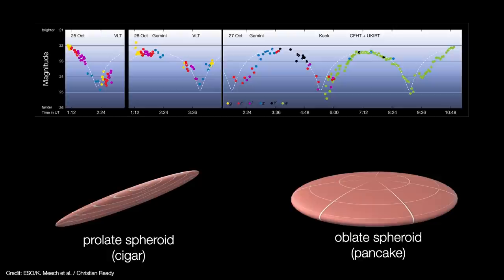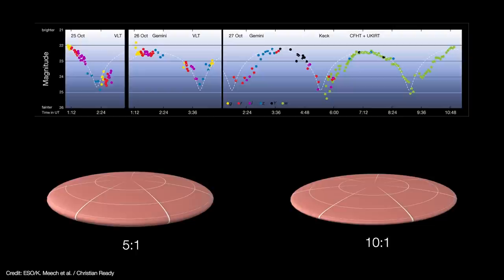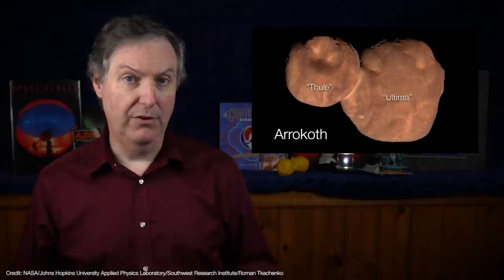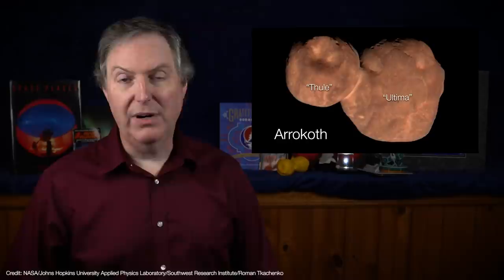But everything about Oumuamua just seemed to defy explanation. Its light curve suggested it was shaped either like a cigar or a pancake, with axis ratios between 5 to 1 all the way up to 10 to 1. Even the hamburger-shaped Ultima lobe of Arrokoth has an axis ratio of about 2 to 1, and that was considered surprisingly flat. Oumuamua's axis ratio, at the very least, was more than twice as extreme.